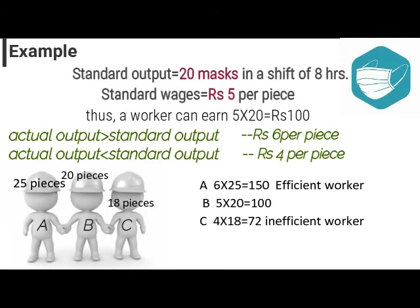For example, suppose there is an organization making face masks. After thorough analysis, it has been decided that a worker can produce 20 masks in a shift of 8 hours. The wages have been decided as Rs 5 per piece of mask. So the standard output is 20 masks and the standard wage rate is Rs 5 per unit, meaning a worker will earn Rs 100 in one shift. It has been decided that if a worker produces more than 20 masks in one shift, he will get wages at Rs 6 per piece, and the one who produces less than 20 masks in a shift will get Rs 4 per piece.